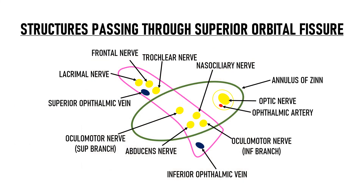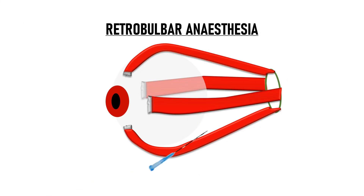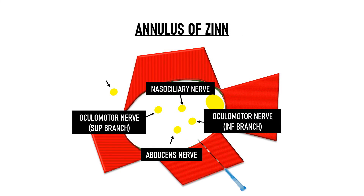Looking at structures passing through the superior orbital fissure, the optic nerve, oculomotor nerve and abducens nerve all pass through the annulus of Zinn, while the trochlear nerve lies just outside it. Therefore, the trochlear nerve supplies the superior oblique from outside the muscle cone, whereas all other extraocular muscles are innervated from inside the cone. This is why in retrobulbar blocks — which are intraconal injections of lignocaine — the trochlear nerve may escape the effect of anesthesia.